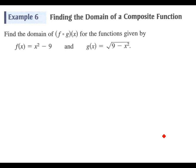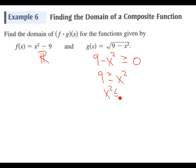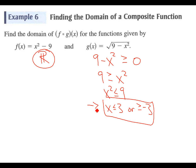Let's talk about the domain of a composite function. We want to find the domain of g composed with f of g of x. The domain of f of x is all real numbers. For g of x, which is the square root of 9 minus x squared, we need 9 minus x squared to be greater than 0, so x squared is less than 9, meaning x must be between negative 3 and 3. Since f's domain is everything but g's domain restricts to that interval, g's domain supersedes and that's our answer. Try that on exercise 41.